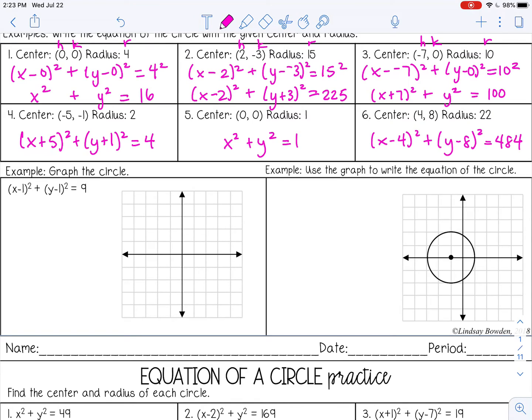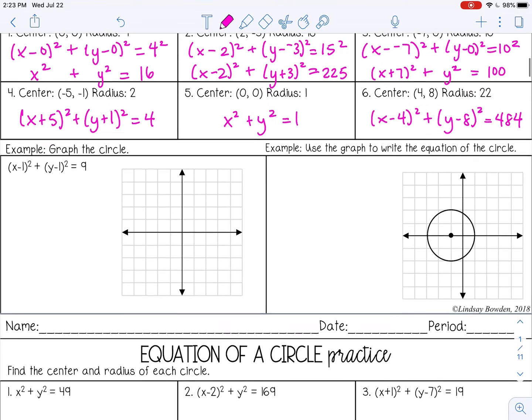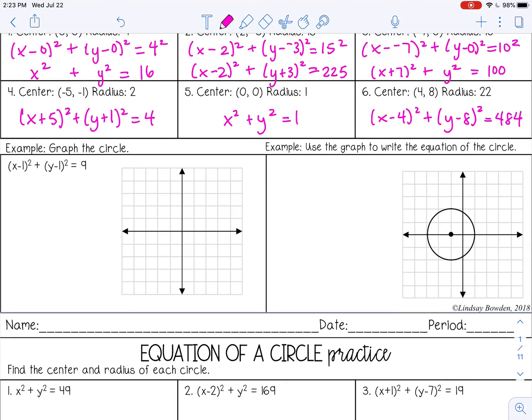So in the first example, it says to graph the circle and we're given the equation. So we need to write out the center and the radius first. So my center would be (1,1). My radius would be 3. Okay, so I'm going to graph my center (1,1).